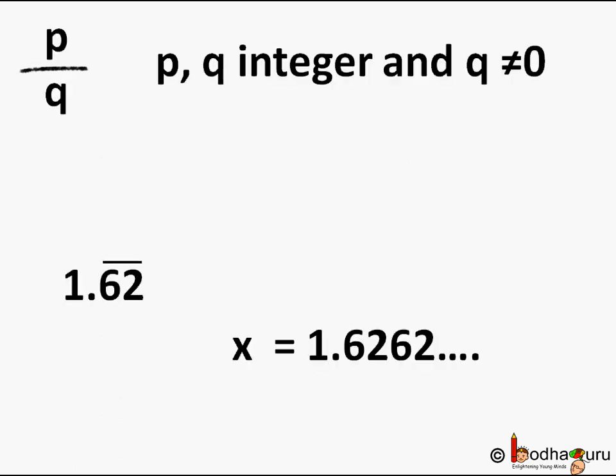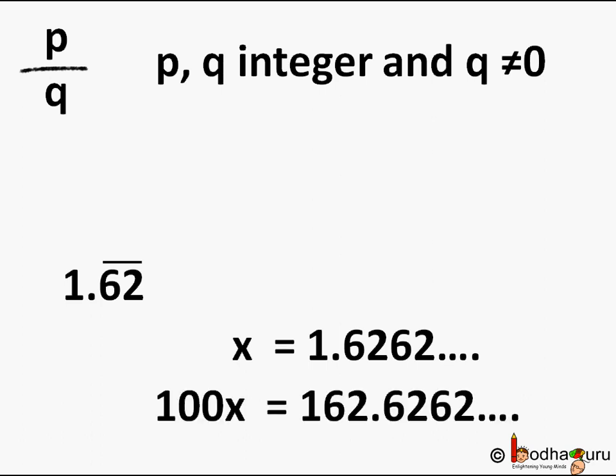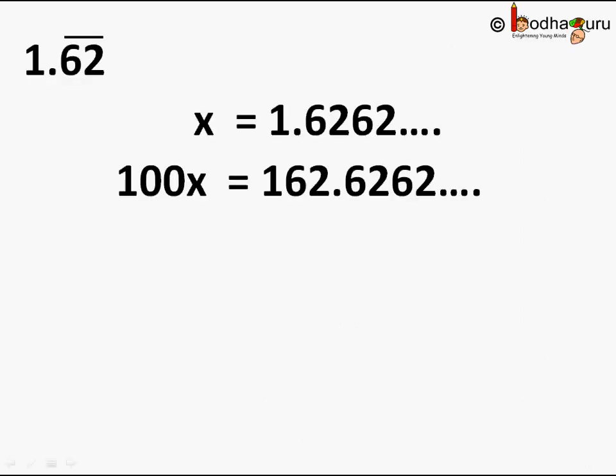So let us say 1.62 where 62 will repeat. So x equal to 1.626262 and so on. We need to get one repeating pattern before the decimal. So to get the two decimals before, we need to multiply it by 100. So 100 times x will become 162.6262 and so on.